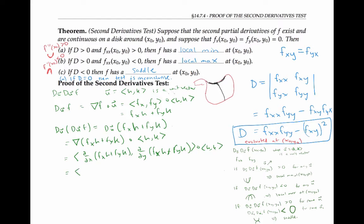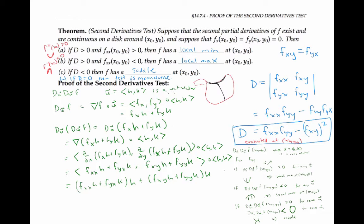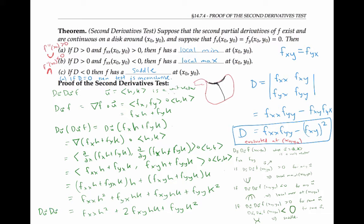Since h and k are constants, distributing and taking the dot product gives f_xx · h² + f_yx · hk + f_xy · hk + f_yy · k². By Clairaut's theorem the mixed partials are equal, so this simplifies to f_xx · h² + 2f_xy · hk + f_yy · k². That is the directional derivative of the directional derivative of f.